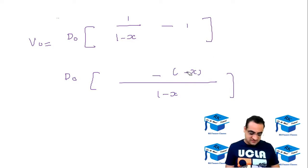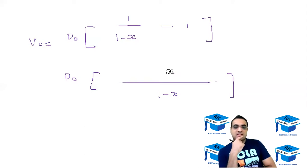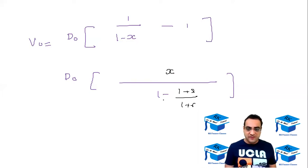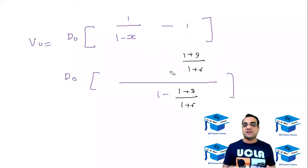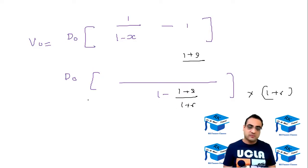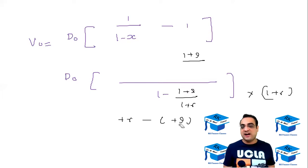Opening the bracket: one minus of minus one removes to one, then minus of minus x becomes plus x. So the numerator simplifies to x, giving D0 into x upon one minus x. Now substituting the value of x as one plus g upon one plus r, we multiply numerator and denominator by one plus r. The one plus r in the numerator cancels the one plus r from x, leaving one plus g in the numerator. In the denominator, one plus r goes inside: one plus r into one is one plus r, and one plus g upon one plus r into one plus r is one plus g, then one and minus one cancel leaving r minus g.